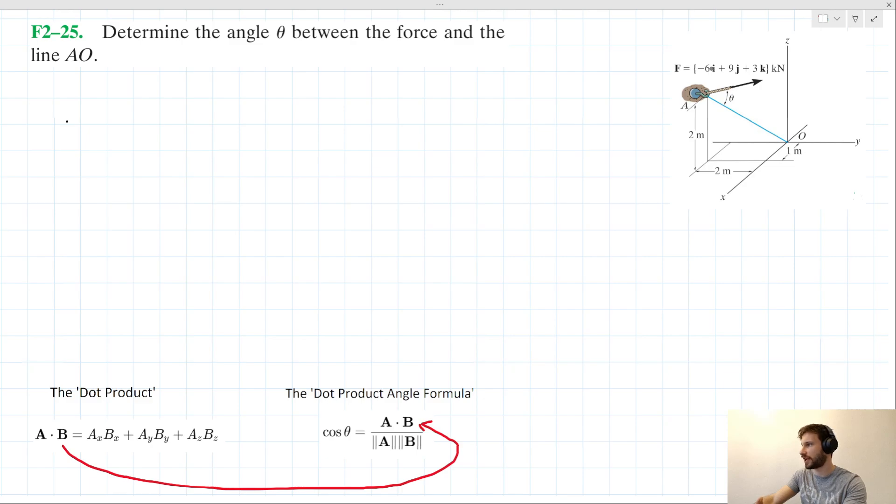We have them for force F, we don't have them for AO, but we can determine them from a diagram. So AO x here is evidently equal to minus 1. AO y here is going to be equal to 2. And AO z here is going to be equal to minus 2.